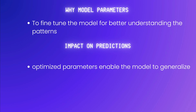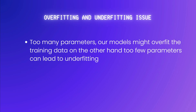Why are model parameters important? During the training process, the model iteratively adjusts these parameters to minimize the difference between its predictions and the actual outcomes in the training data. It's like the model fine-tuning its intuition to better understand the patterns it sees. The optimized parameters enable the model to generalize — essentially applying what it learned during training to real-world situations. If we have too many parameters, our model might overfit the training data, memorizing it without understanding the underlying patterns. On the other hand, too few parameters can lead to underfitting, where the model oversimplifies and misses important patterns.